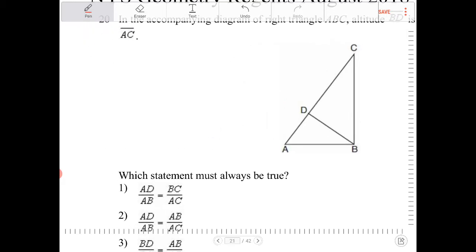So this is another classic geometric mean question from the New York State Regents. Any time that you have a right triangle where you draw the altitude from the right angle to the hypotenuse,